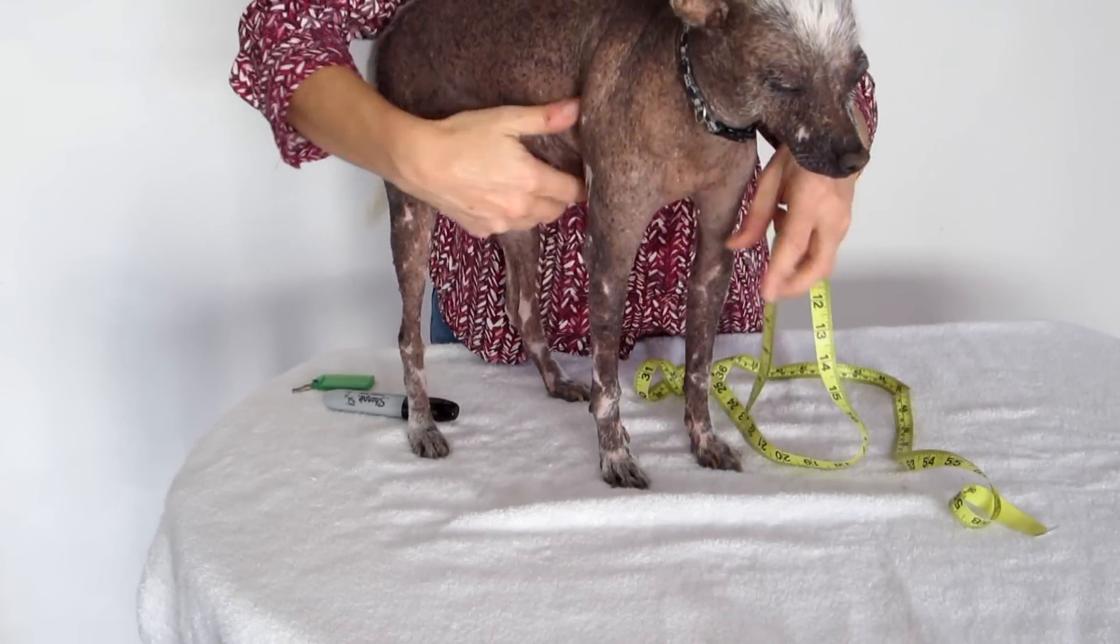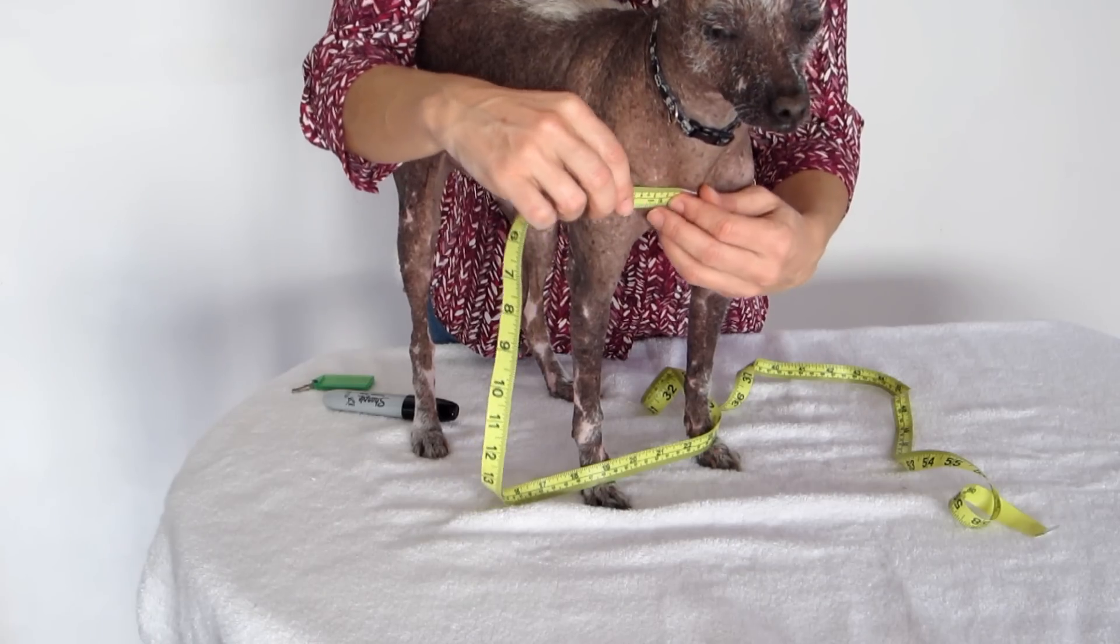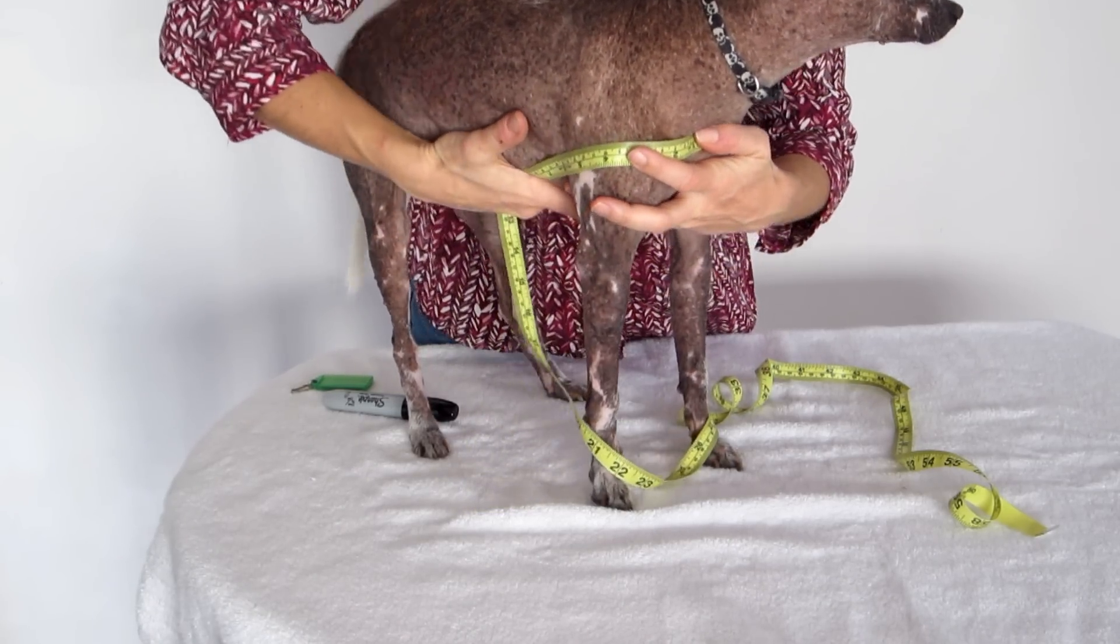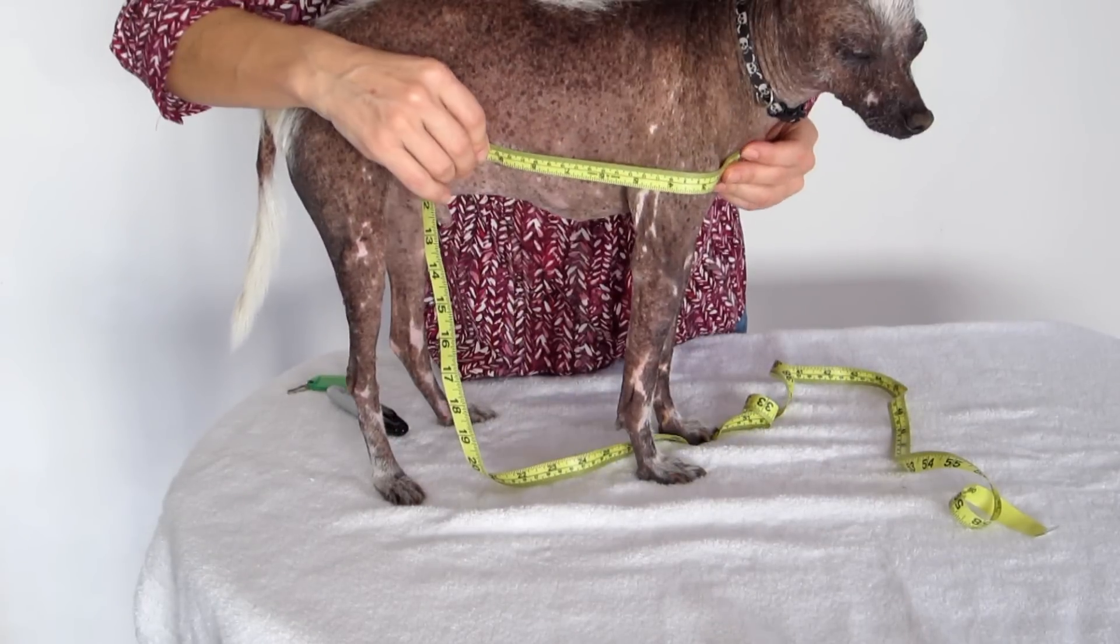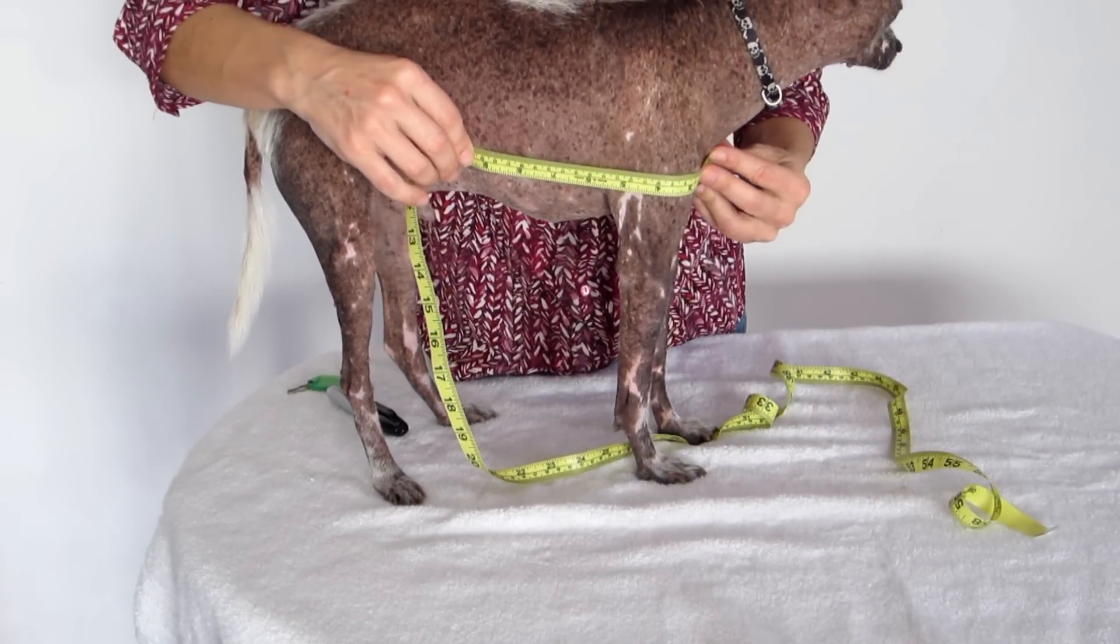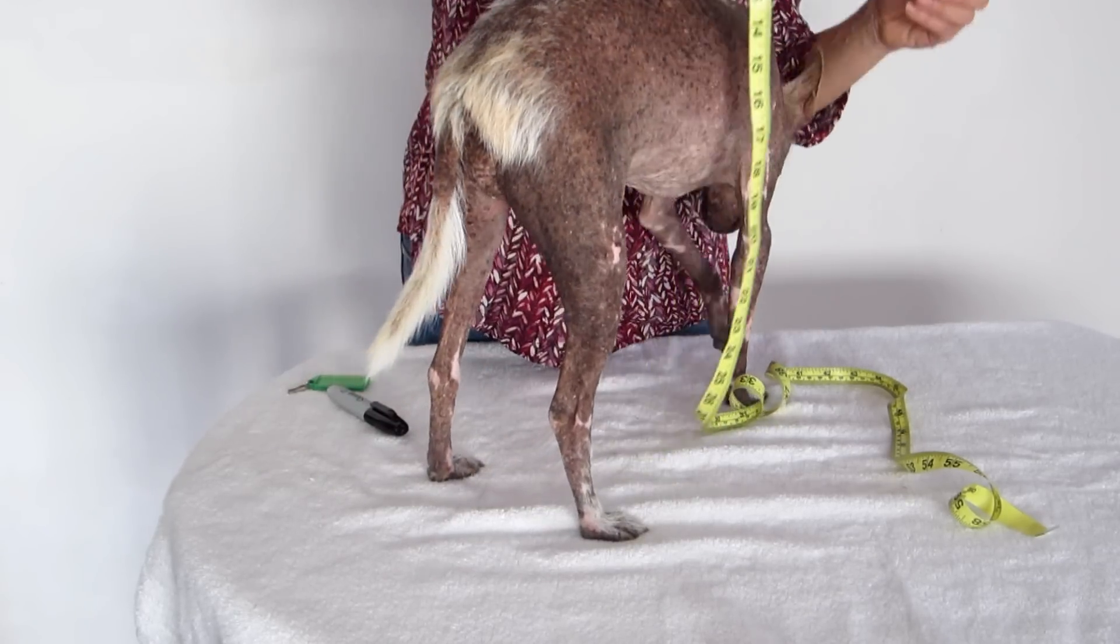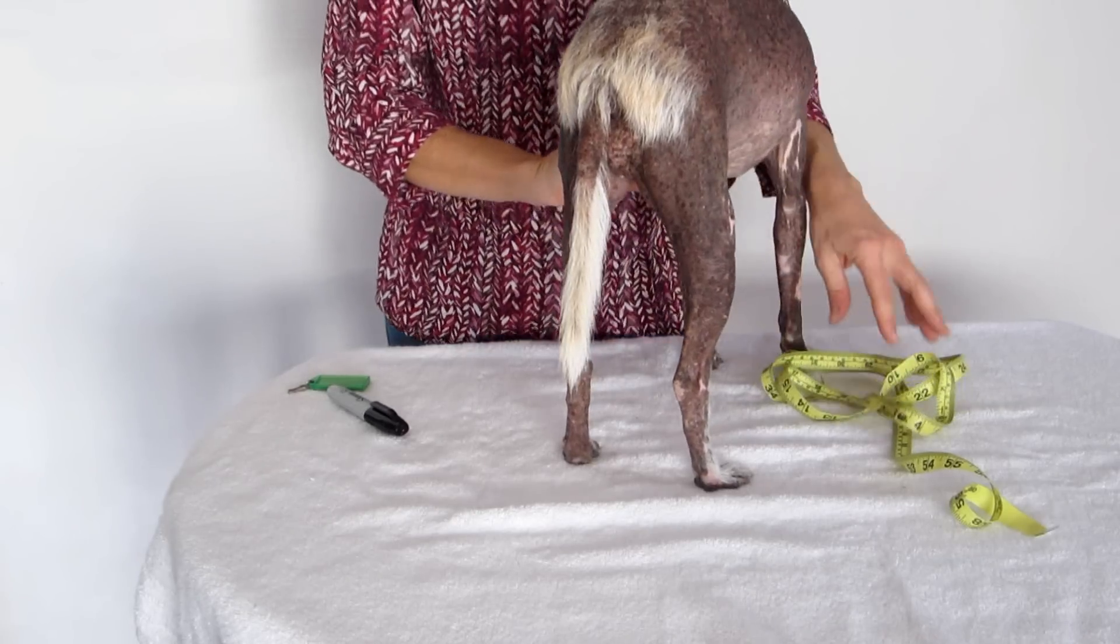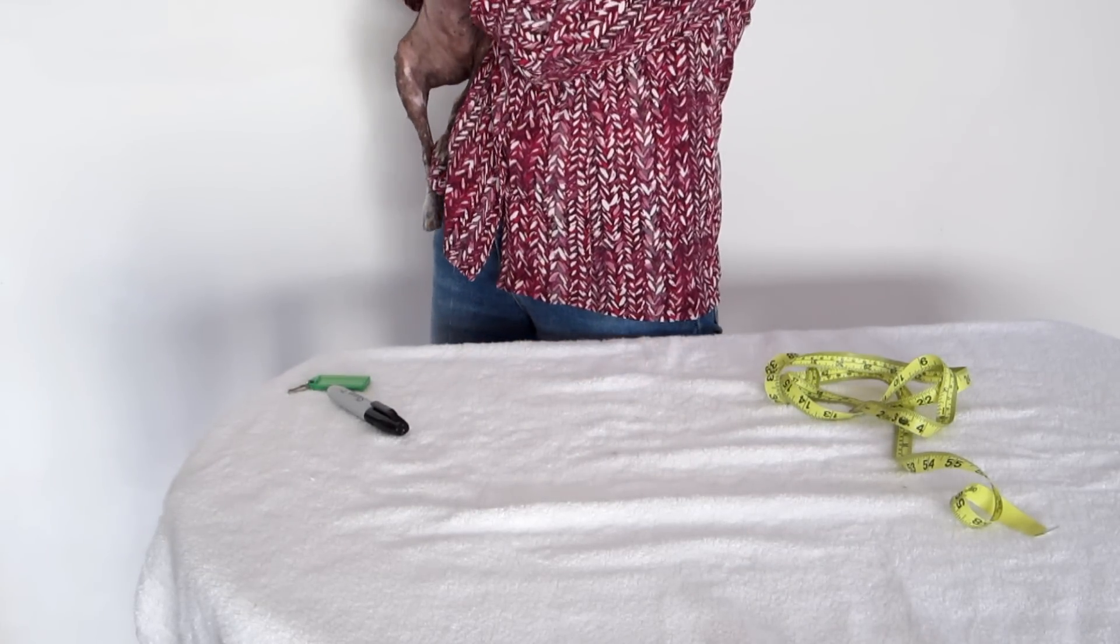And finally, we're going to measure from his wishbone to the end of his rib cage. Now if it's a female dog, you can measure it further back. Hopefully it's parallel to the ground when you're measuring. Write that measurement down, and now we'll do the pattern. You can go play, you're such a good boy.